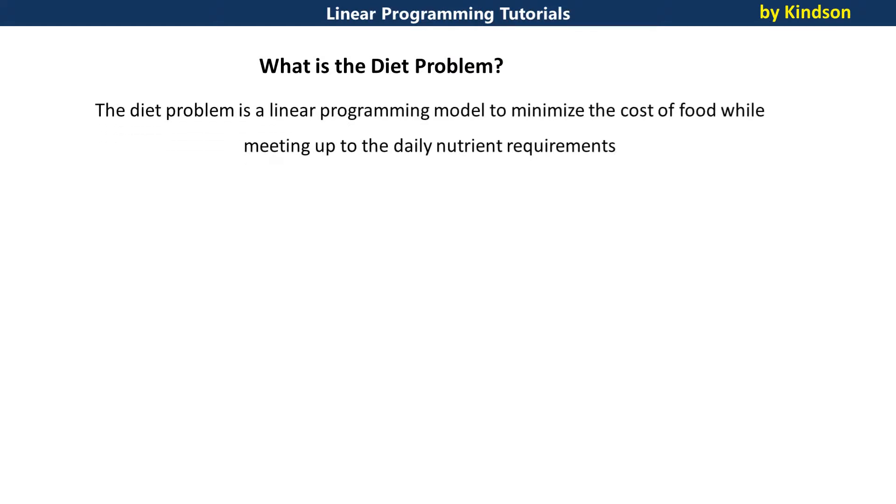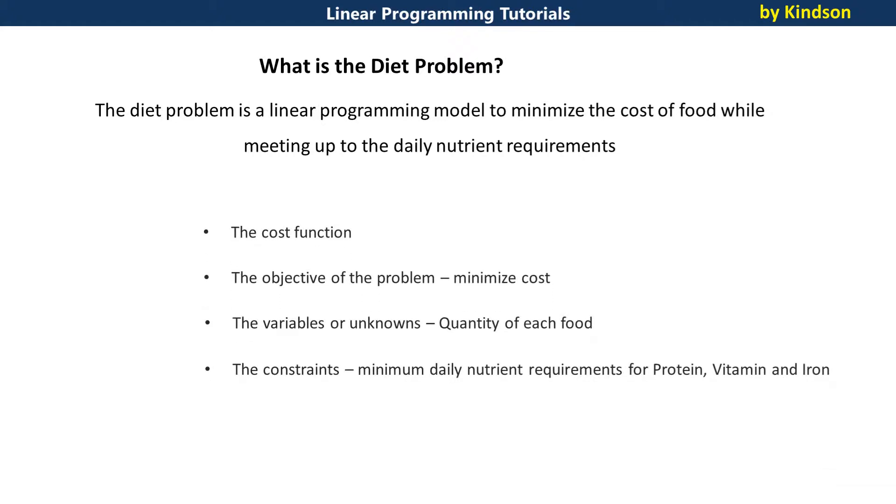The diet problem is a linear programming problem that has to do with trying to minimize the cost of food while meeting up the daily nutrient requirements. We are saying that you need to eat enough food to meet up the daily nutrient requirement, there is a constraint you need to meet an amount of nutrient, but you also need to minimize the cost.